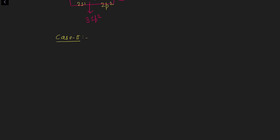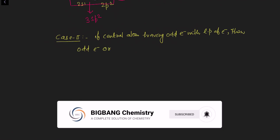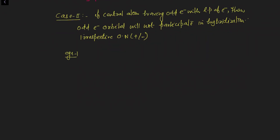Case number two: if the central atom has an odd electron along with a lone pair of electrons, then the odd electron orbital will NOT participate in hybridization, irrespective of the oxidation number. Whatever oxidation number the central atom has — either positive or negative — it does not matter. There are two very interesting examples.